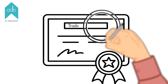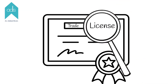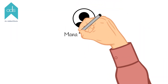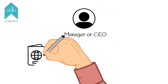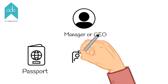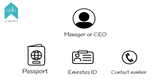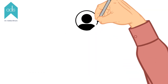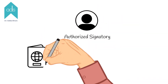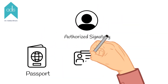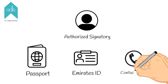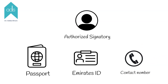Trade License. Manager, CEO, or equivalent documents like Passport, Emirates ID, or Contact Number. Same for an authorized signatory — documents like Passport, Emirates ID, or Contact Number.